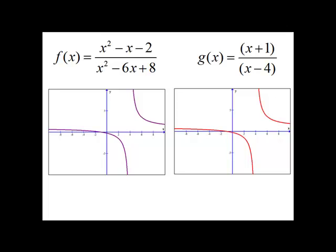As we can see, they both have a vertical asymptote at 4, because 4 is not in the domain of either function.